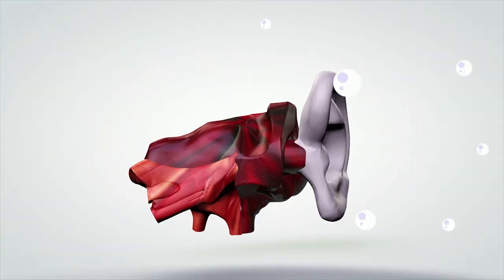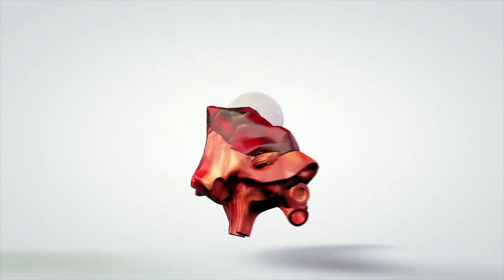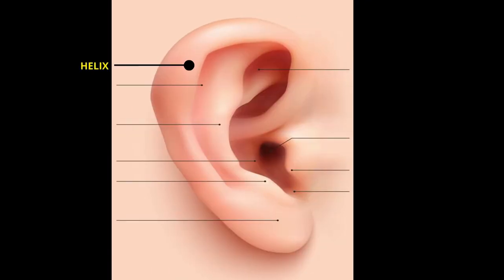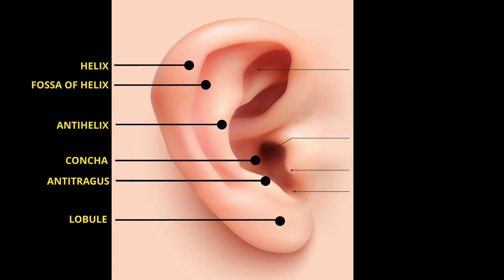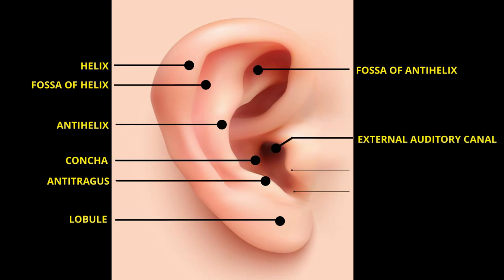Now let's check out some vocabulary relating to the anatomy of the ear — there's tons of really interesting English here. First up we have the helix, and indicated on screen is the fossa of helix. Below this we have the anti-helix. The depression in the ear beside this is known as the concha. Indicated on screen is the anti-tragus. The lobe — in medical terms known as the lobule — is indicated as well. Also indicated is the fossa of anti-helix, and beside the concha is the external auditory canal. Beside the canal we have the tragus, and below the tragus we have the incisura inter tragecia.